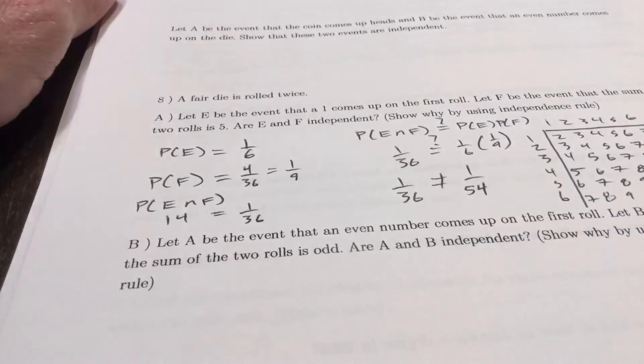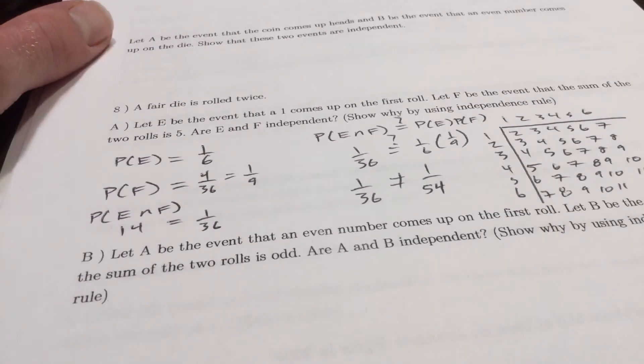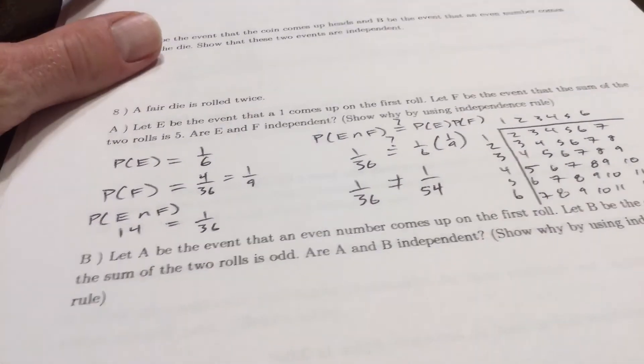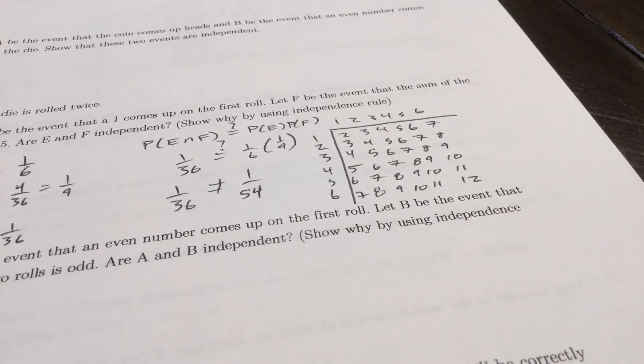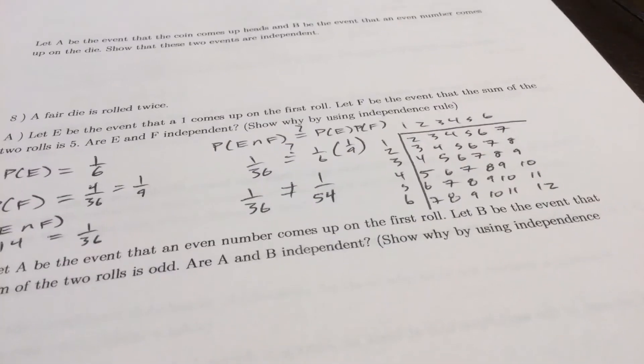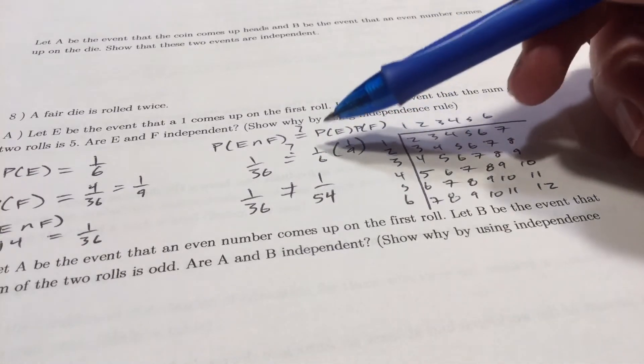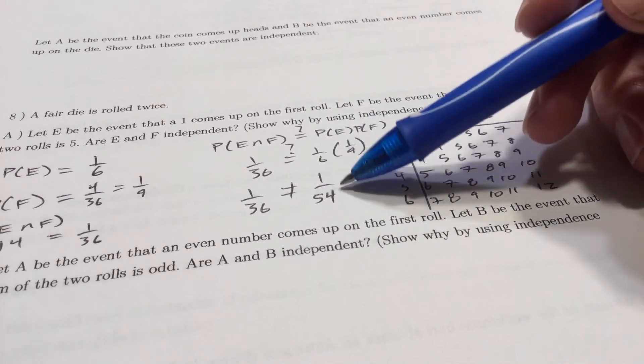Let's talk about 8a. On 8a we've got something with independence. Let E be the event that a one comes up on the first roll, so probability of E is one out of six. Let F be the event the sum of the two rolls is five. Using one through six, one through six, 36 sums, four of the 36 are a sum of five. Probability of F is one ninth. You have to check: does the probability of the intersection equal the probability of the first event times the second? One sixth times one ninth is one fifty-fourth.